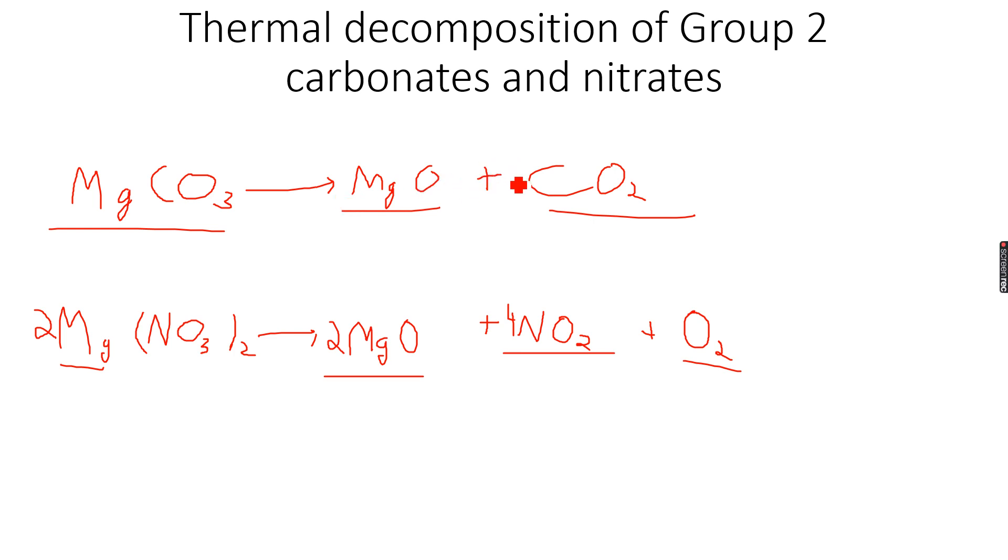What we can do is we can actually measure the mass initially and the mass finally. The mass of the solid initially will be the mass of MgCO3. The mass of the solid finally will be the mass of MgO. So you know that the mass of MgO will be lower than that of MgCO3 because CO2 has escaped. So that's how we really determine whether decomposition has taken place.